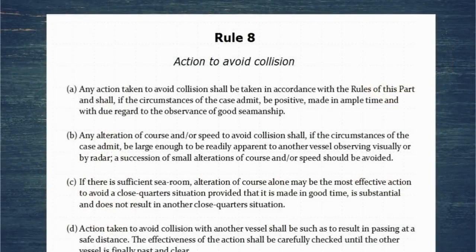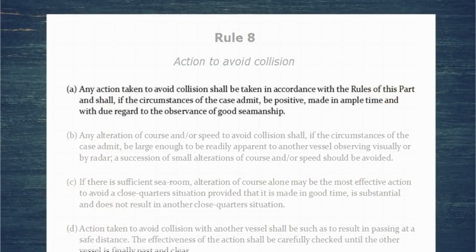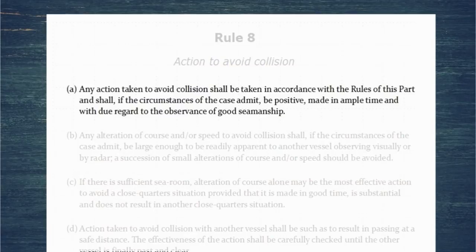Rule 8, Action to Avoid Collision — the first paragraph: Any action taken to avoid collision shall be taken in accordance with the rules of this part, and shall, if the circumstances of the case admit, be positive, made in ample time, and with due regard to the observance of good seamanship. This paragraph is very much the common sense paragraph. The action needs to comply with the rules, needs to be positive, in ample time, and you've still got to observe good seamanship.